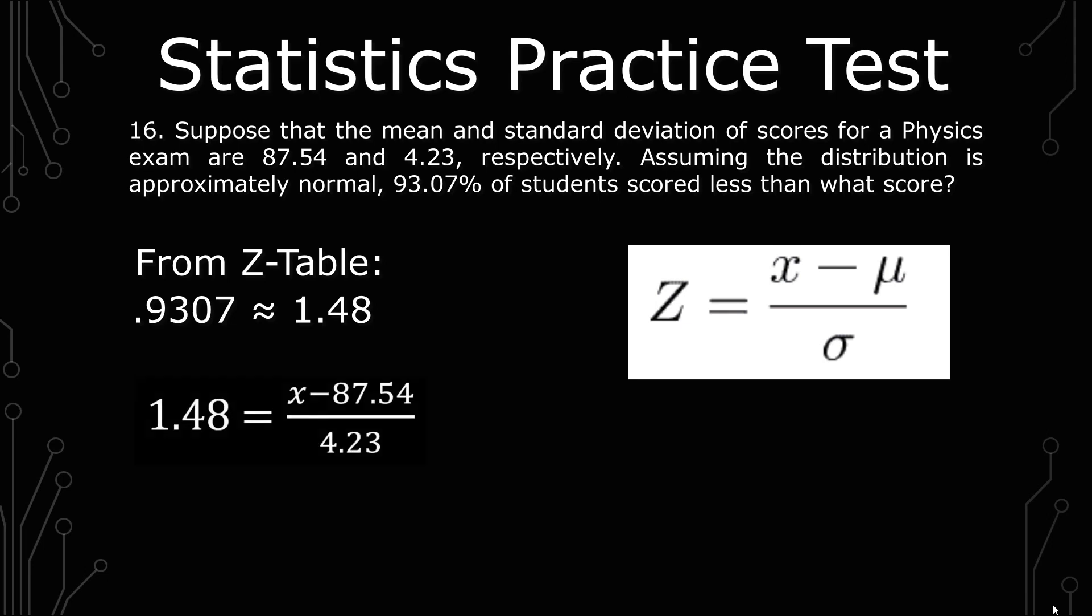You get 1.48, and then the 1.48 equals the formula for the z-score, x minus 87.54 over 4.23.